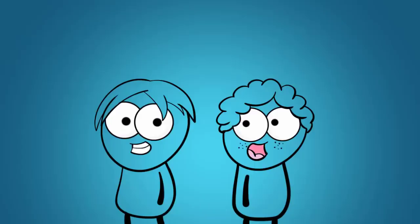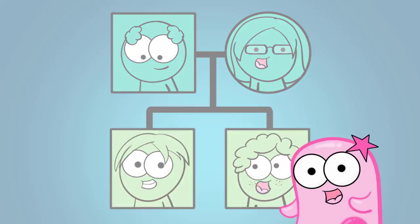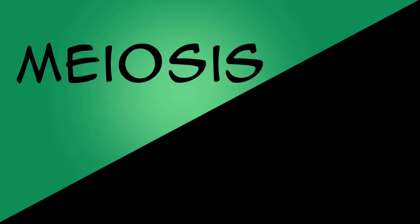Have you ever wondered how two siblings can have the same mom and dad and still look so different? Well today we're going to talk about a process that makes that possible, a process called meiosis.